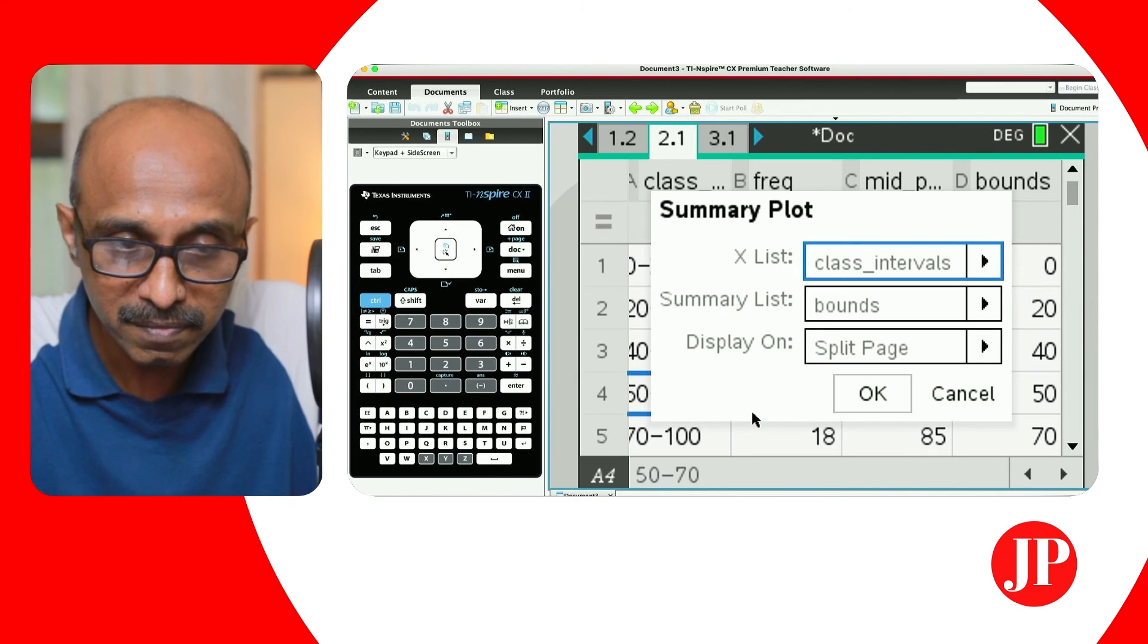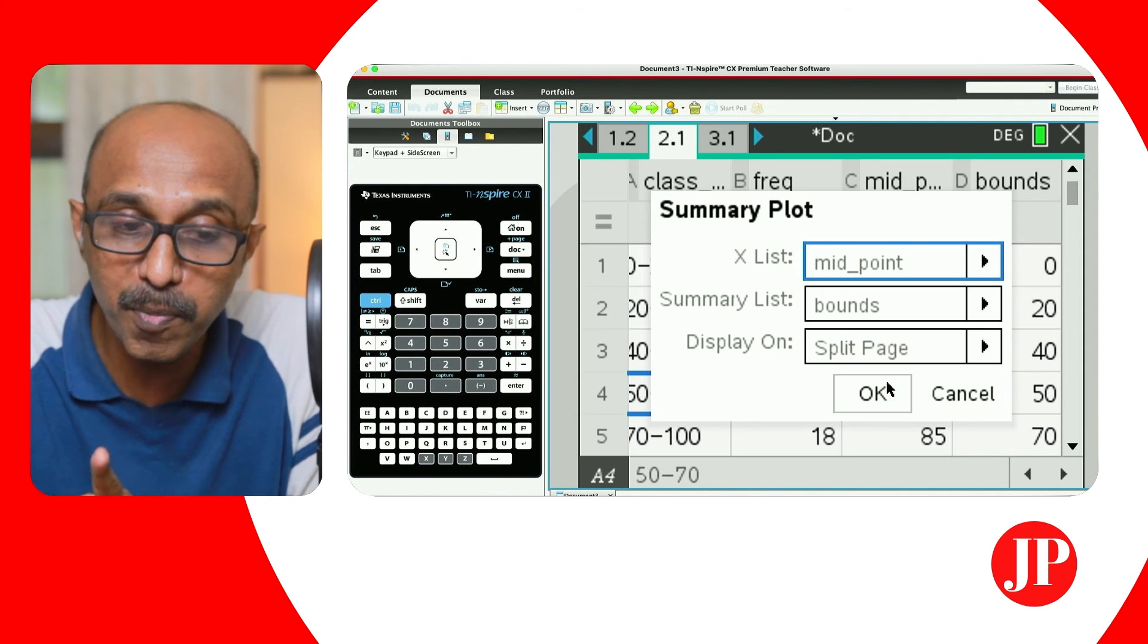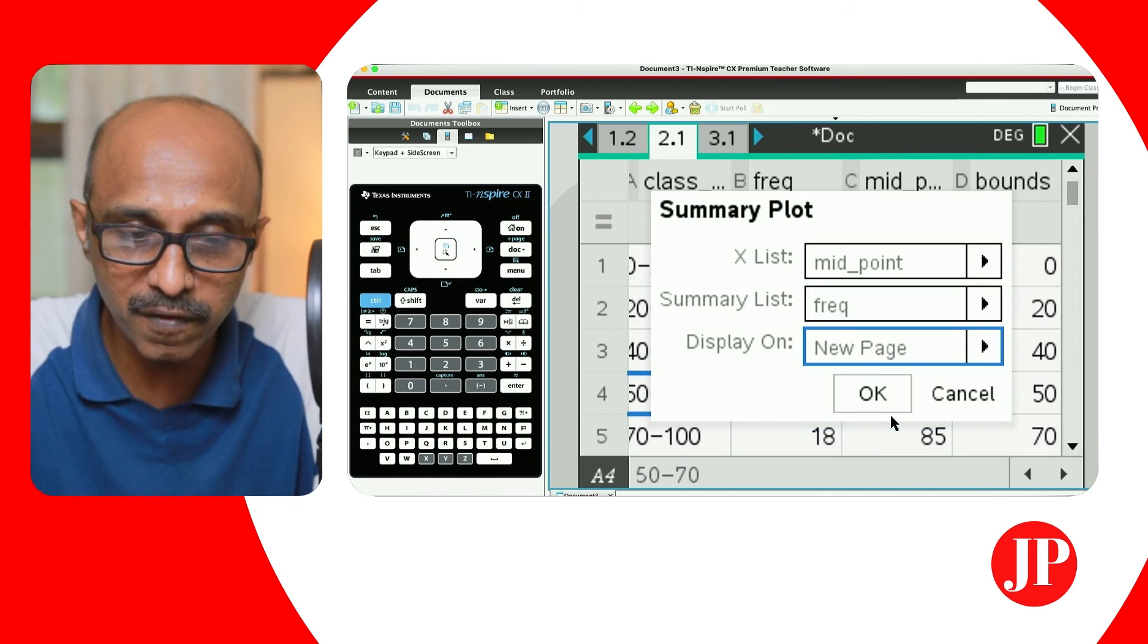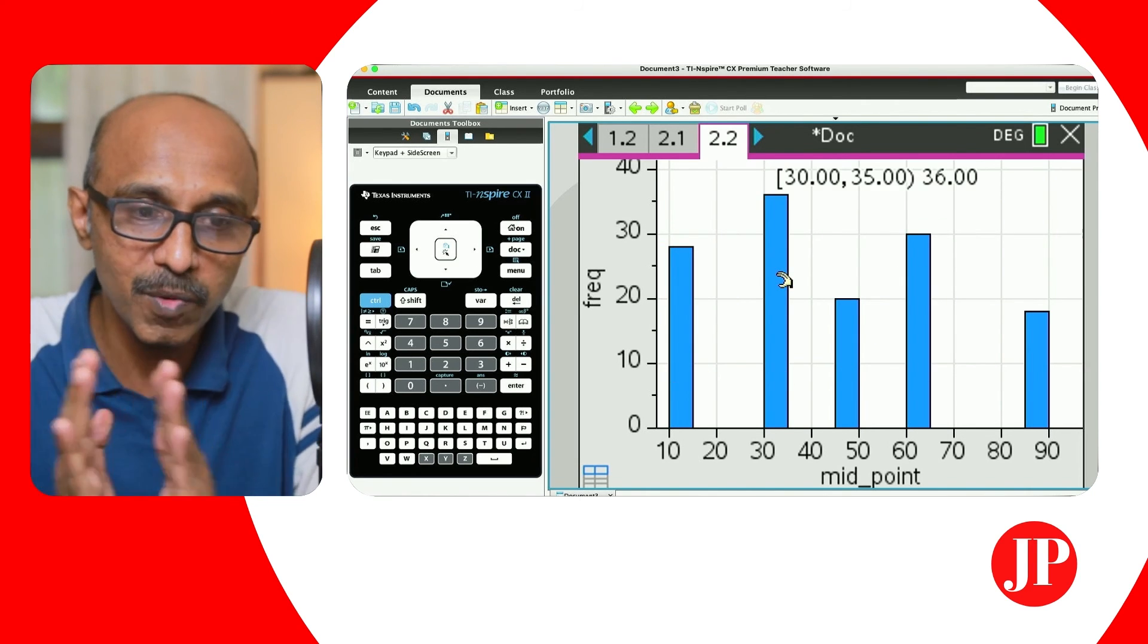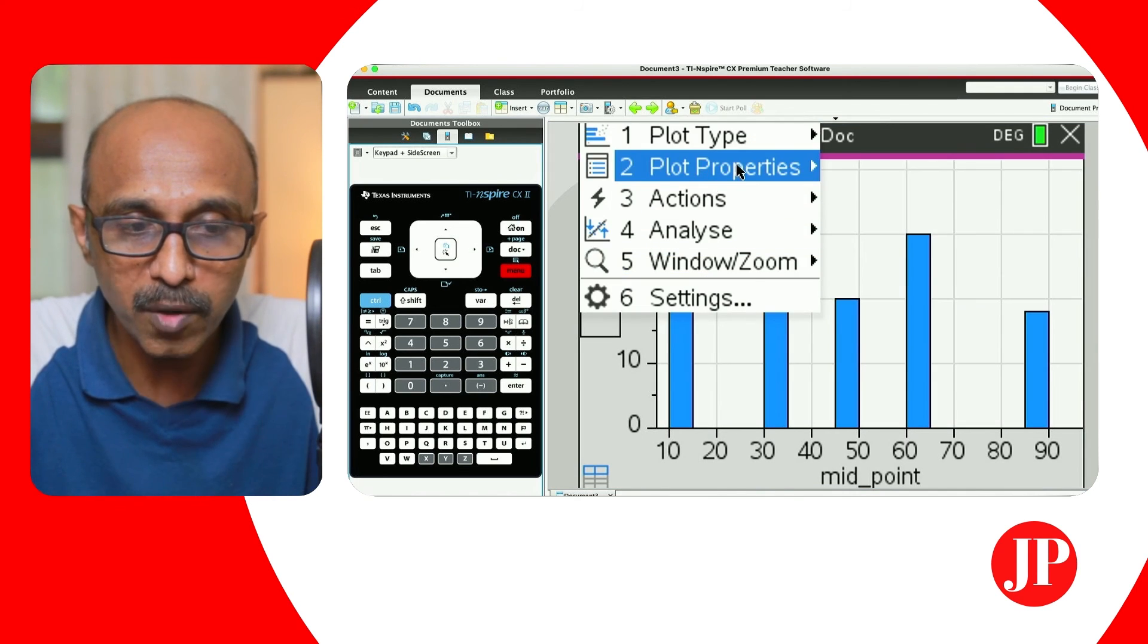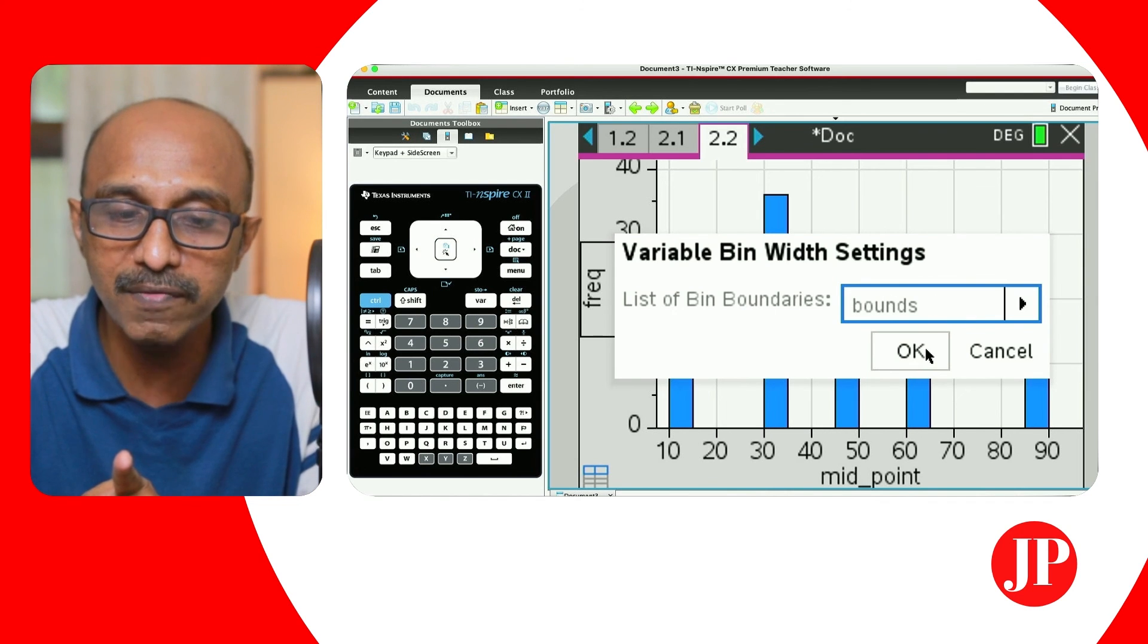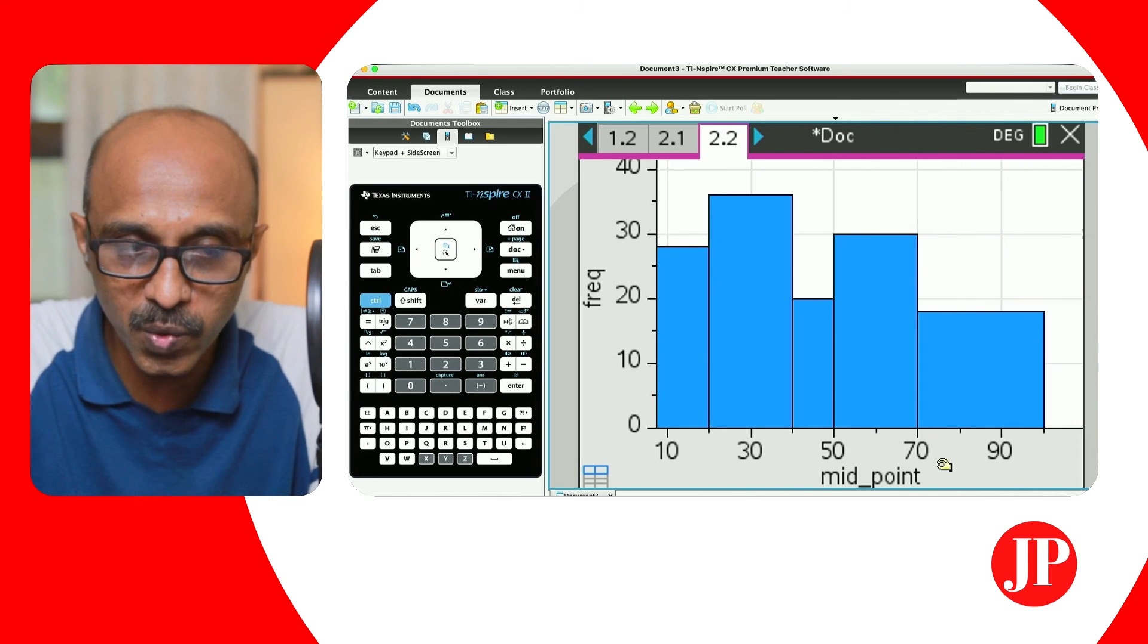So let me just hit right click and say summary plot is what we're looking for. And X list is not class interval, but it's going to be the midpoint that we've created. And the summary list is not bounds, but it is the frequency. Keep that in mind. And we want it in a new page, of course. And there we go. So we've got our histograms, but it's still not what we want. We want it to be, remember what we said, the unequal bandwidth. So we're going to go to menu plot properties, histogram properties, bin settings, and this time variable bin width. And we say, we want it from that list, which says bounds. And we say hit okay.